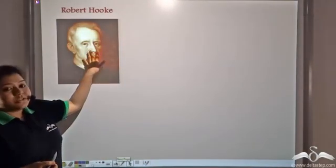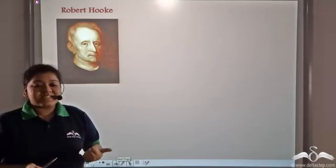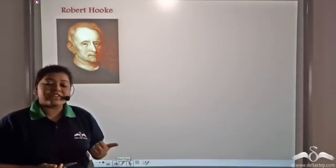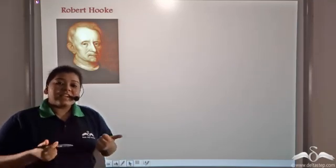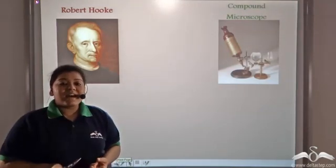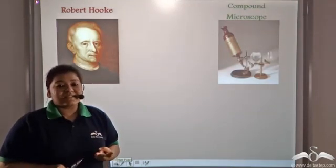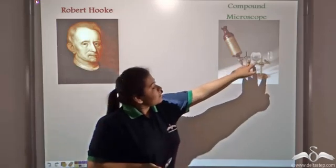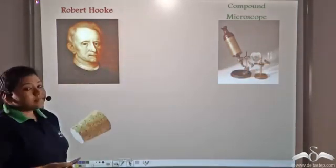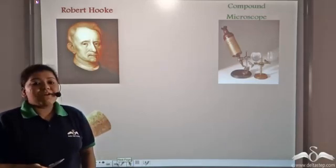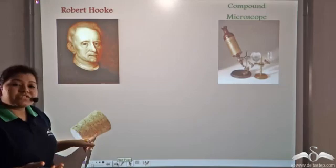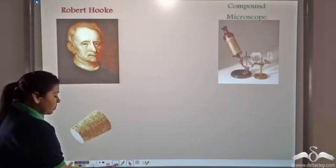Now, Robert Hooke was an English physicist. He furthered this invention of a simple microscope and he developed the first compound microscope that had two biconvex lenses. With this compound microscope, he observed cork, which he obtained from a plant, and this is what he saw.